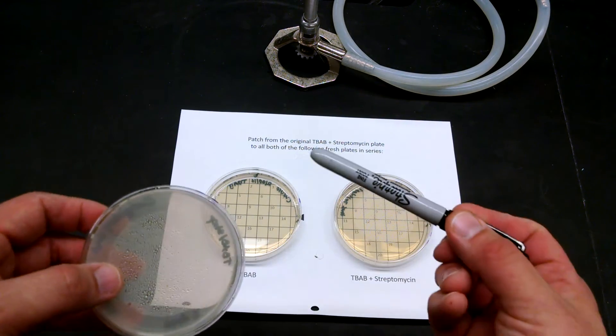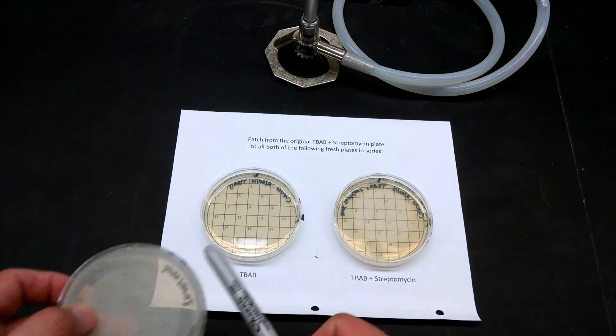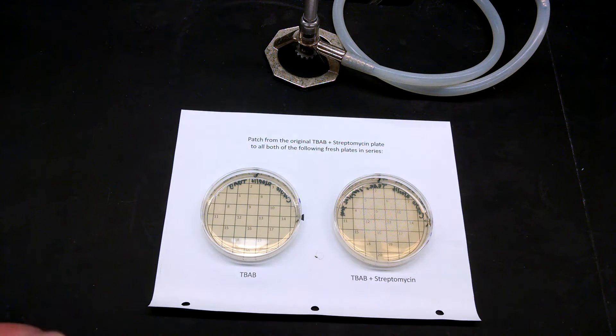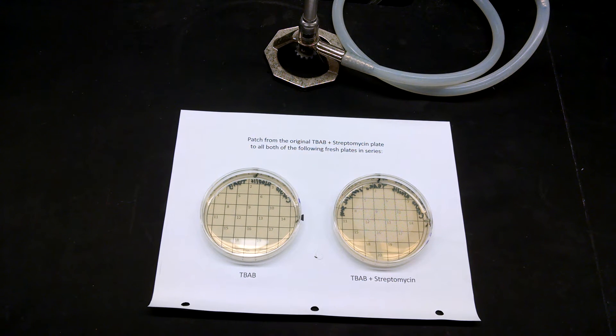And so here's how we're going to do it. What we're going to do is we're going to take a toothpick, touch a colony, and if you look through the plates, what you will see is... Let's see if I can zoom in.